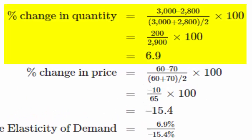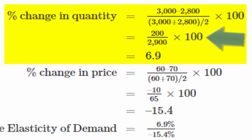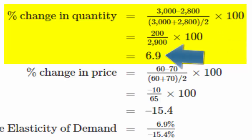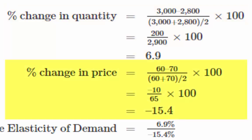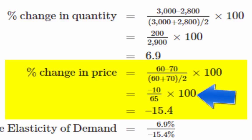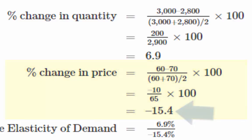Note that we averaged the denominator before we divide, then we convert it to a percentage by multiplying by 100. Our percentage change in quantity is 6.9%. Next, we calculate the percentage change in price. Note that we divide the denominator by 2 to average it, and then we multiply it by 100 to convert it to a percentage. Our percentage change in price is negative 15.4.